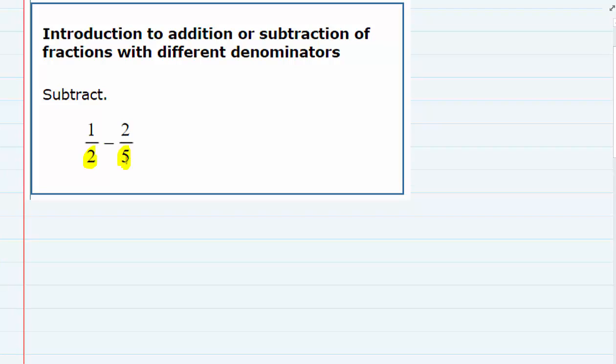That's going to be our starting point. We need to get a common denominator, which means we first need to find the lowest common multiple of both 2 and 5.